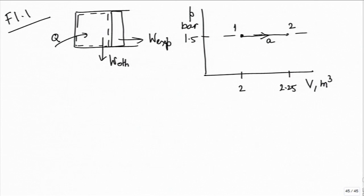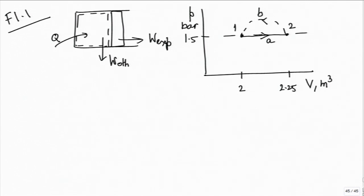It is brought back by some non-quasi-static process - just link this up by a dotted line. This is process B. Just to remove clutter I have shown it above A; you could have shown it below A, or even crossing A any number of times, but as a dotted line. The position of the line is meaningless. So 1-A-2 is the first process and the second process is 2-B-1. Is that clear now?